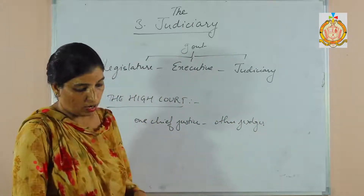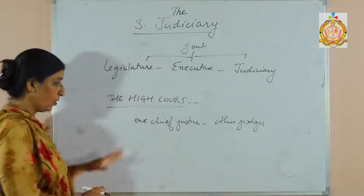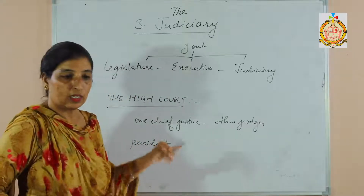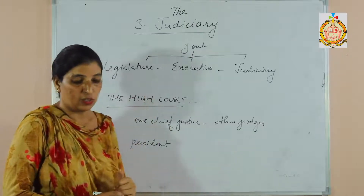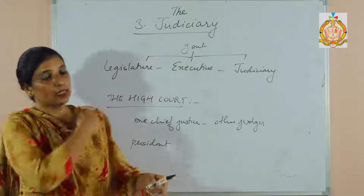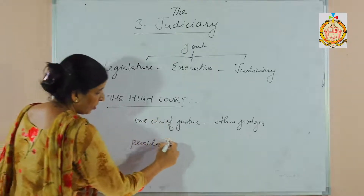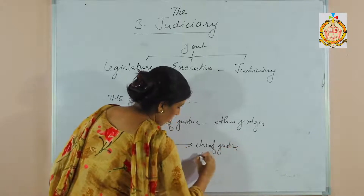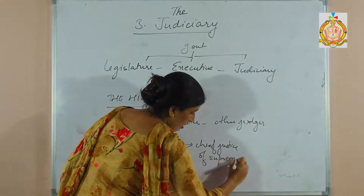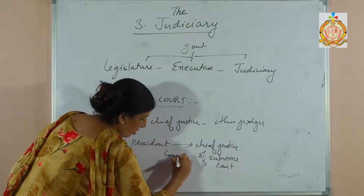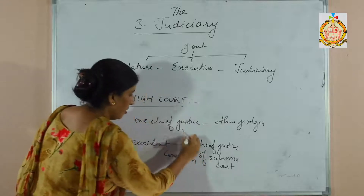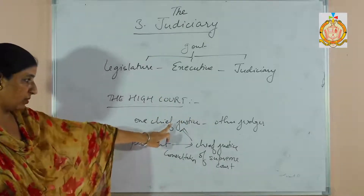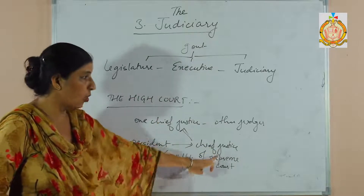Next is how the Chief Justice is appointed — who appoints the Chief Justice. The President is the one who appoints the judges of the Supreme Court as well as the judges of the High Court. The President can take the consultation of the Chief Justice of the Supreme Court regarding the appointment. So, if the Chief Justice of the High Court is to be appointed, the President appoints the Chief Justice of the High Court with the consultation of the Chief Justice of the Supreme Court.